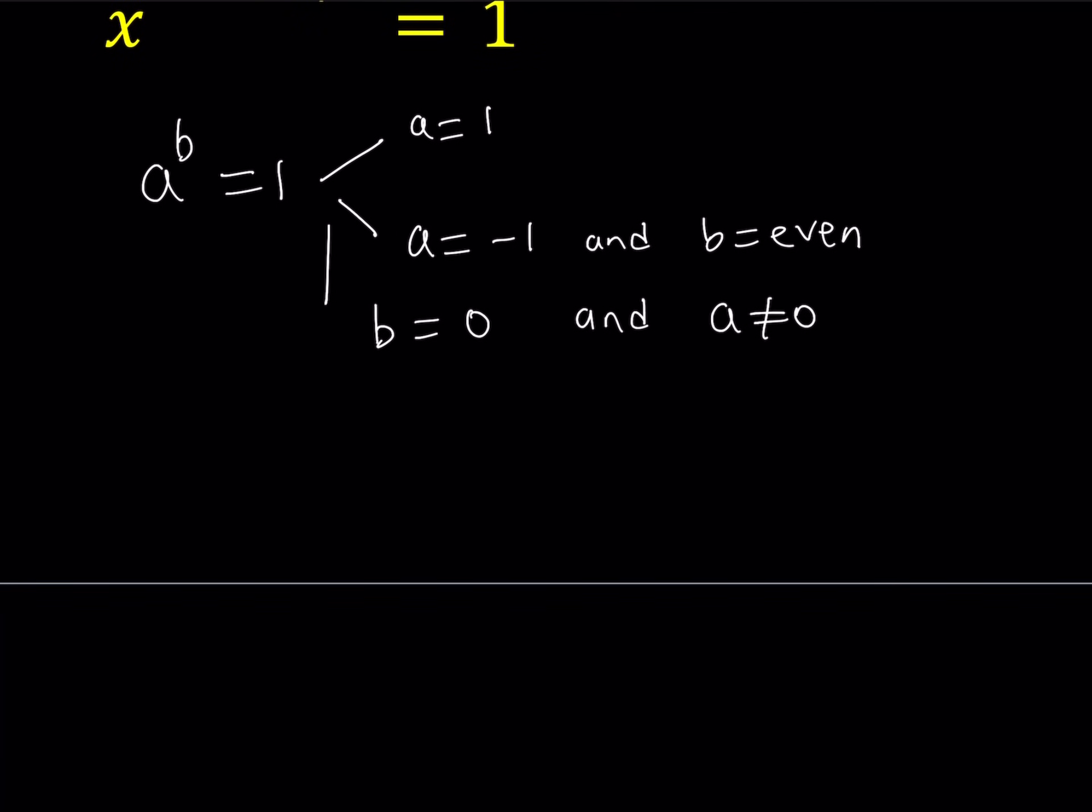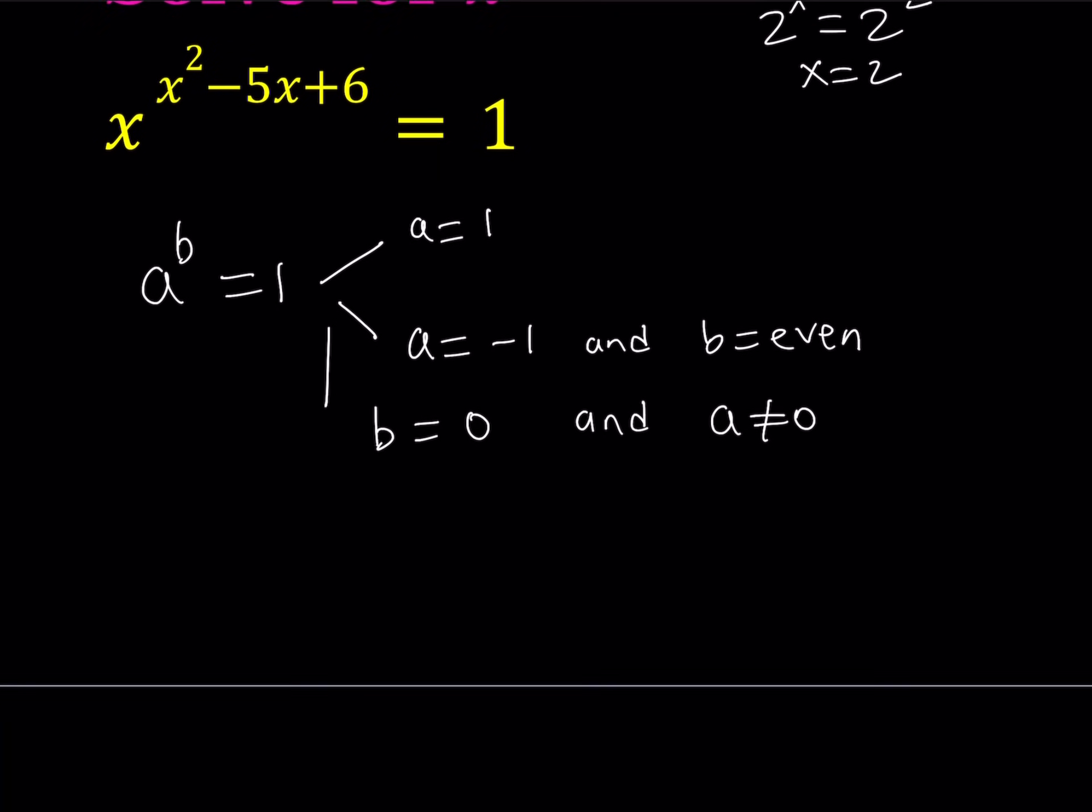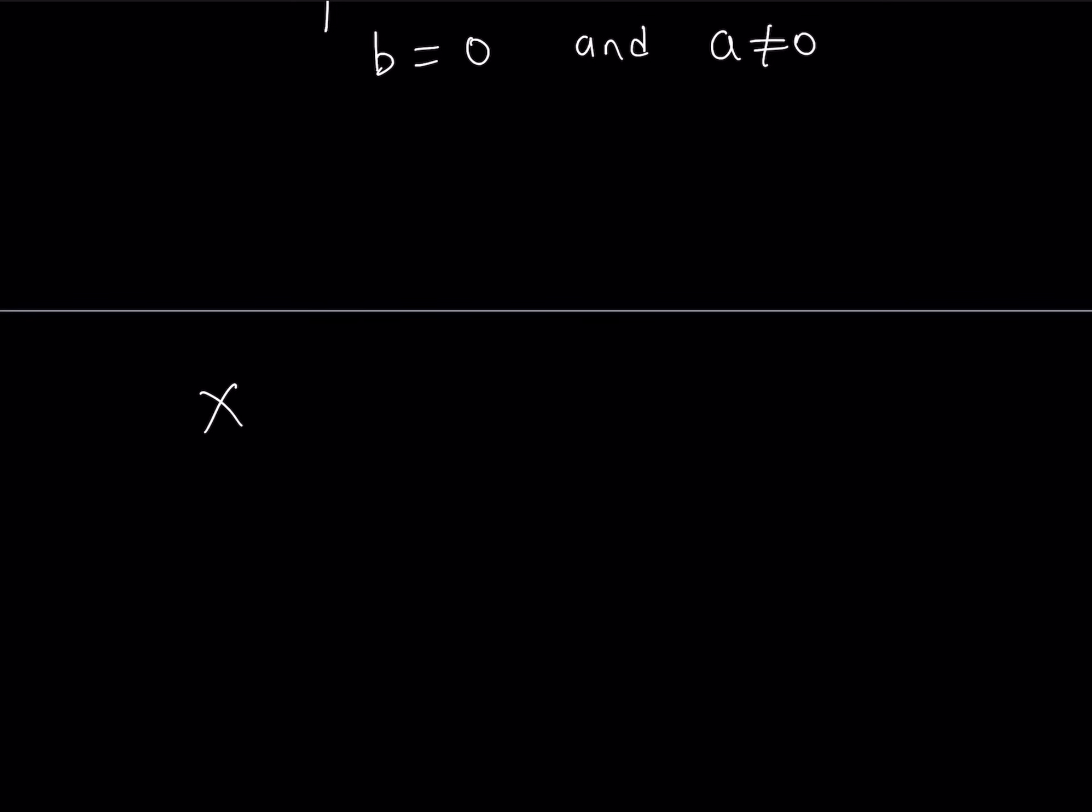So the first one we're going to be looking at the base being 1. So I have x to the power x squared minus 5x plus 6 equals 1 and what happens if x is equal to 1 then I get a valid solution. So x equals 1 is a valid solution. Good, that's my first case.